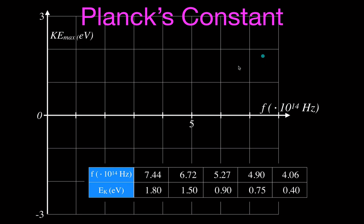We're going to graph all five. You want to do this very carefully because you should notice that they all line up on a straight line, because there is a linear relationship between the frequency of the light and the kinetic energy those electrons will have. When you increase the frequency, you increase the energy, and after overcoming the work function, as you increase the frequency and energy, those electrons will have more kinetic energy — more energy left over to give to those photoelectrons.